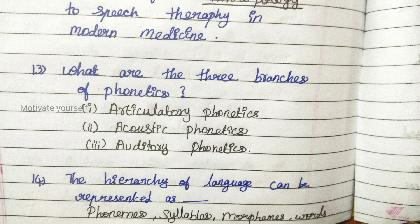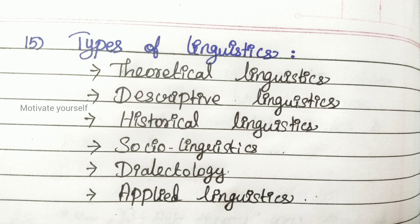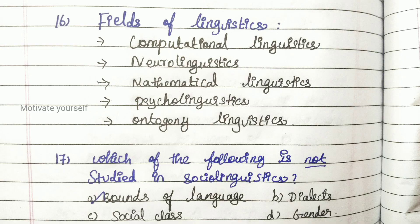Fourteenth question: the heritage of language can be represented as phonemes, syllables, morphemes, and words. Fifteenth question: types of linguistics — theoretical linguistics, descriptive linguistics, historical linguistics, sociolinguistics, dialectology, and applied linguistics.